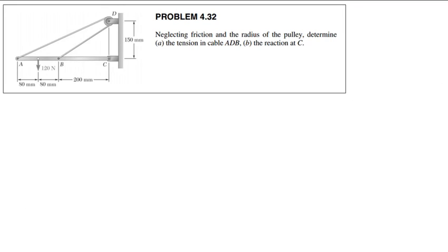Here's another problem. Neglecting friction and the radius of the pulley, determine A the tension in cable ADB, and B the reaction at C. You might be tempted to say this is just like the crane problem and we can ignore the tension — but no, we can't. The cable can react against the pulley, so we can't rule it out. It's not the ship with the fan on it.